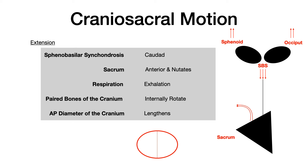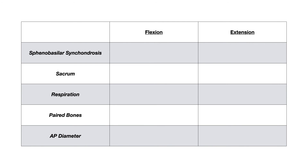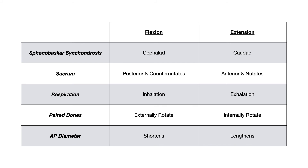Starting at the red point, the AP diameter will lengthen and go from red to blue because the paired bones are internally rotating. This is very high yield — before going further, understand the difference between craniosacral flexion and craniosacral extension: what's happening at the SBS, the sacrum, at what point in respiration each occurs, what's happening at the paired bones, and how that changes the AP diameter. This chart is filled in for your studying — it's extremely high yield.